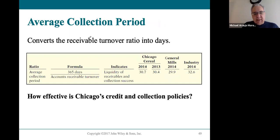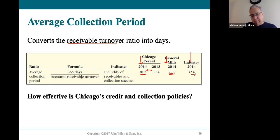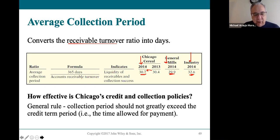The average collection period is 365 divided by the accounts receivable turnover. Chicago Cereal is at 30.7 days, General Mills at 29.9 days, and the industry at 32 days. General Mills is collecting within 30 days — on time or slightly early. Chicago Cereal is collecting a little late. Both are still better than the industry. The general goal is not to let the collection period exceed your payment terms; if your terms are net 30, you want to be paid within 30 days.